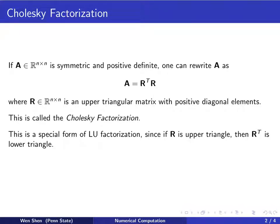So this is called the Cholesky factorization. One can view this as a special form of LU factorization since here R is upper triangular then R transpose would be lower triangular. And since A is symmetric then we would have U equals R and L equals R transpose.